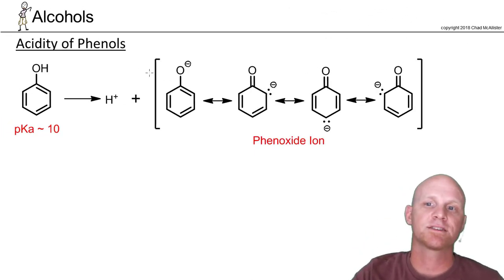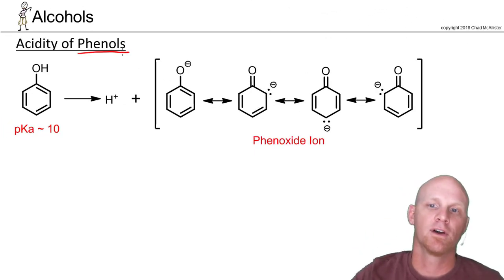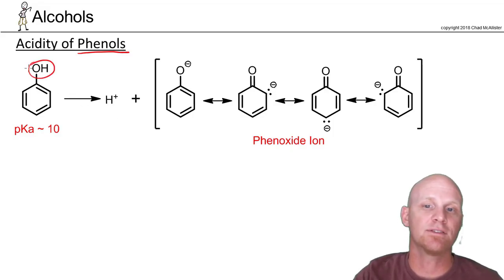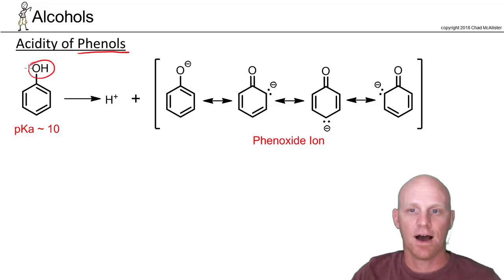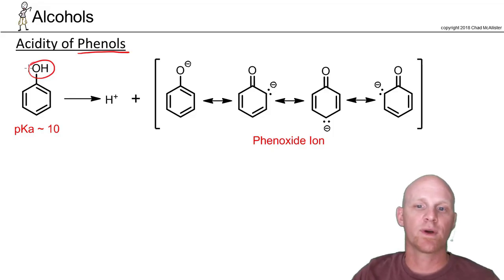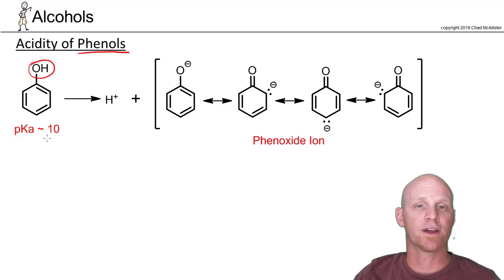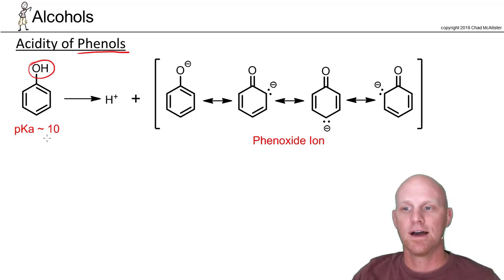Next we'll look at a special class of alcohols called phenols. Phenols are simply alcohols where the OH is attached to a benzene ring. These are quite a bit more acidic than a regular alcohol — the pKa is around 10, much lower than the 15–19 we saw for regular aliphatic alcohols.